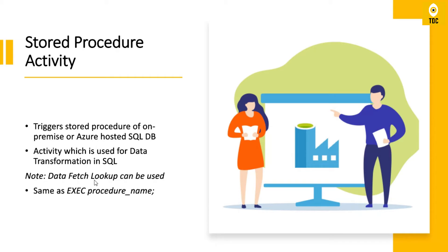In the Lookup activity with a stored procedure, you are expecting less than 4 MB of data or around five thousand records — a limited amount. You are not doing any transformations there; you're just fetching data to be sent to subsequent activities. But in the Stored Procedure activity, the intention is to do data transformation, and we are not expecting anything returned — it may just return a success or failure condition.